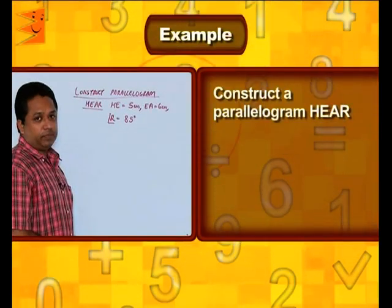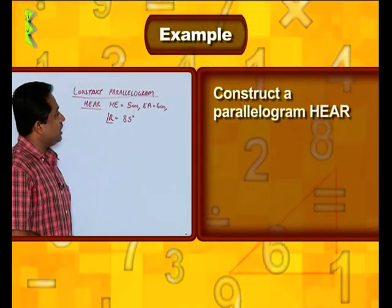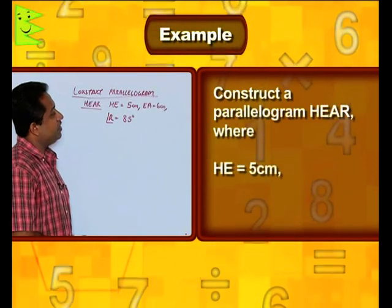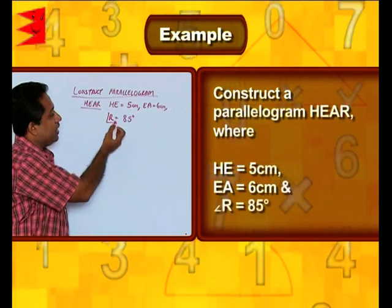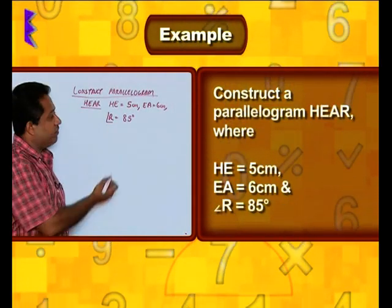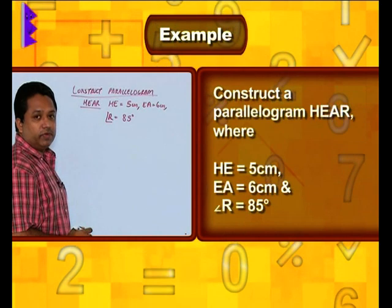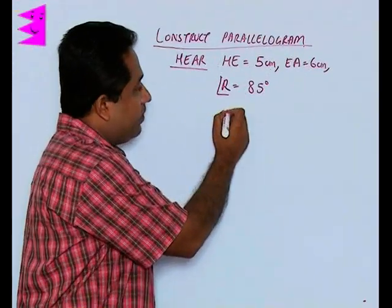Construct a parallelogram HEAR in which HE is 5 centimeters, EA is 6 centimeters, and angle R is 85 degrees. So we have one angle given and two sides of the parallelogram given. Drawing a rough diagram.